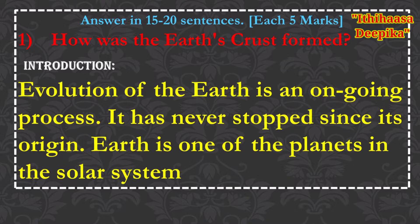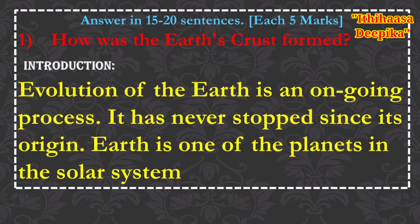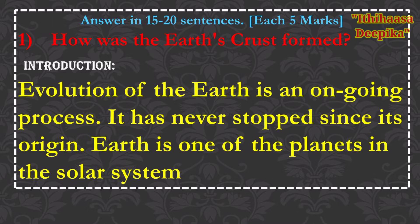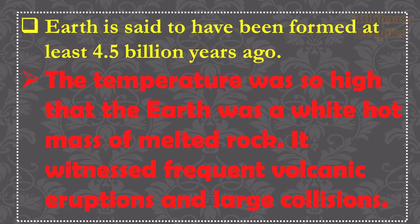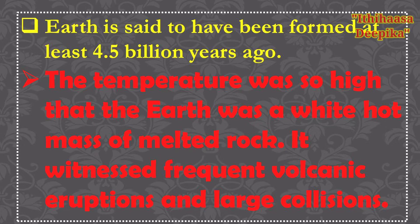How was the earth's crust formed? Evolution of the earth is an ongoing process. It has never stopped since its origin. Earth is one of the planets in the solar system, said to have been formed at least 4.5 billion years ago. The temperature was so high that the earth was a white-hot mass of melted rock. It witnessed frequent volcanic eruptions and large collisions.